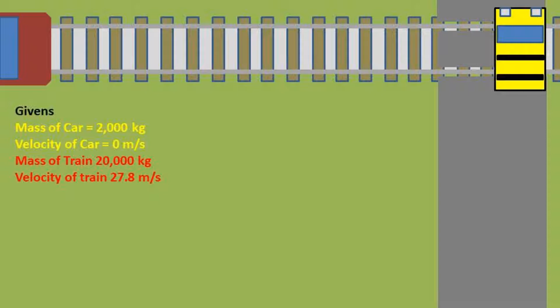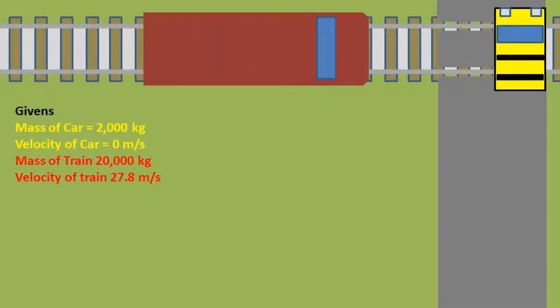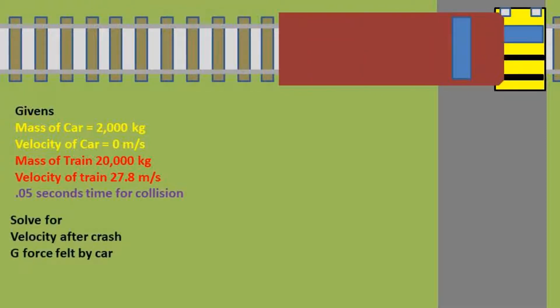We want to solve for the velocity of the car and train after they collide. We also want to find out what the acceleration is of the car and how many g's it is pulling. We will assume that the collision lasted 0.05 seconds and that it is a perfectly inelastic collision, meaning that the train and car are perfectly fused together into one solid mass.